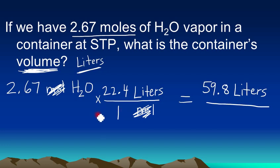That's the end of the lesson. Hopefully you now have an appreciation for how big Avogadro's number is and how small atoms and molecules are. We've learned how to convert from atoms, molecules, and other tiny units to moles and vice versa. We've also learned how to convert from moles to liters of gas at STP and vice versa.